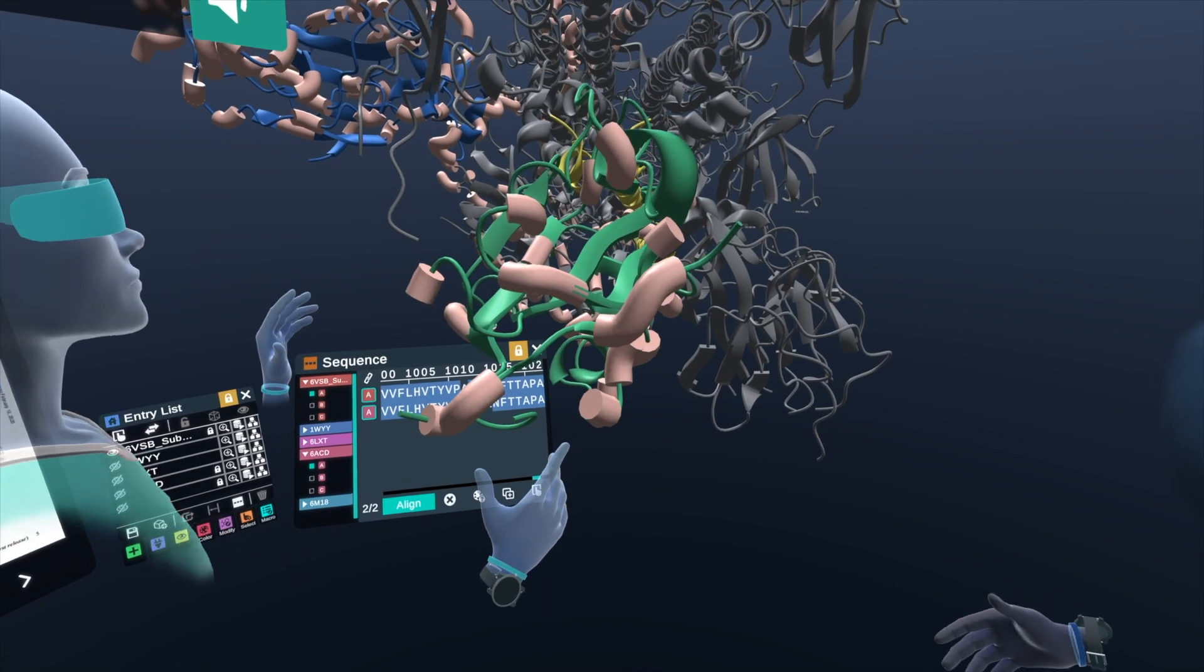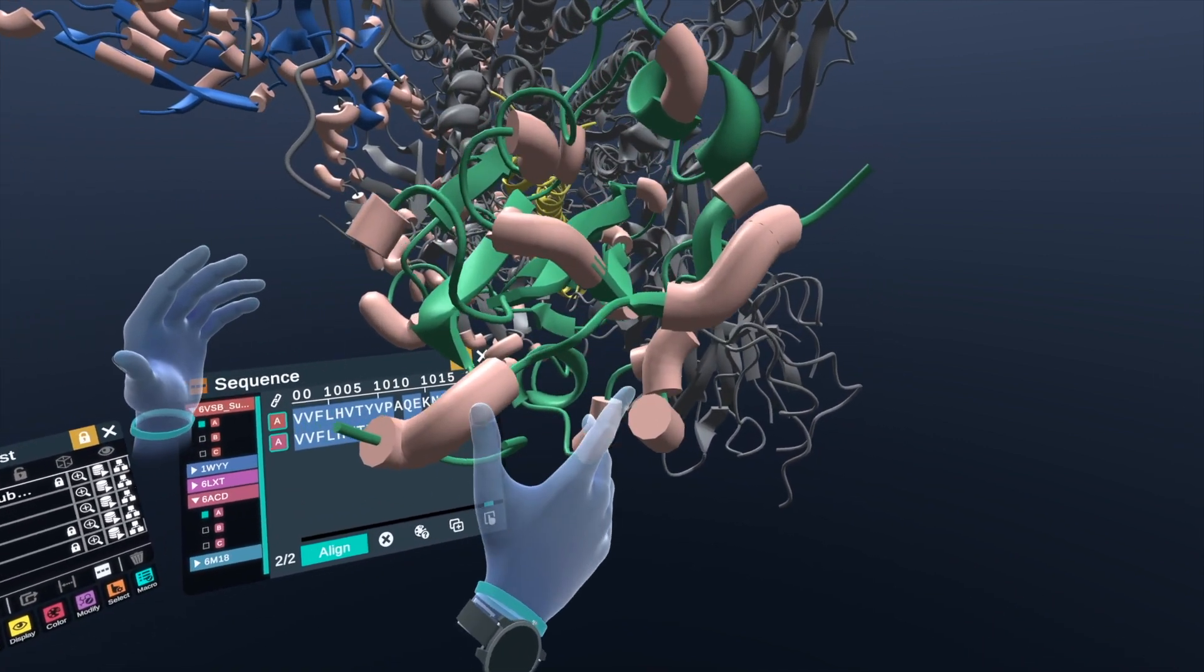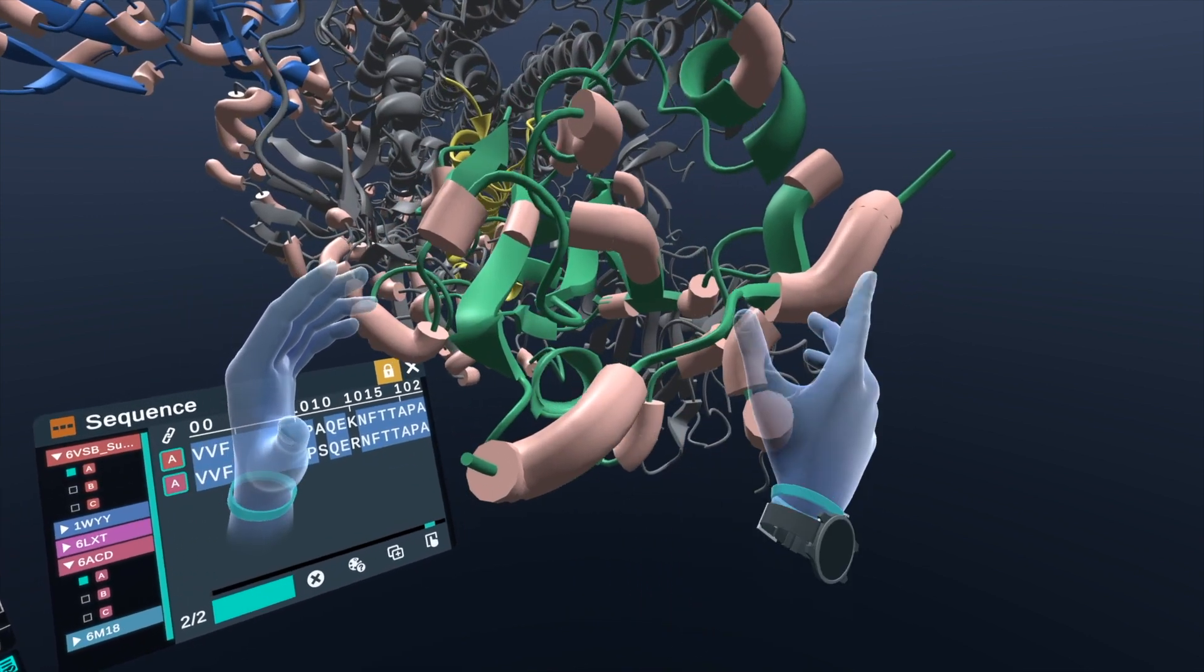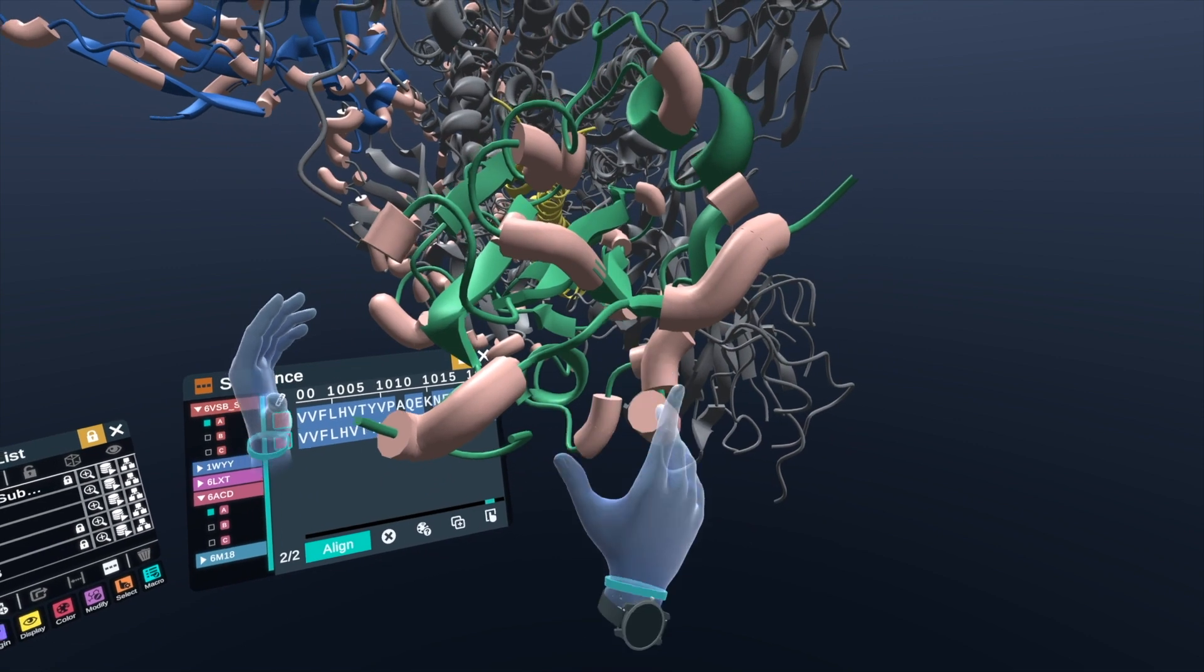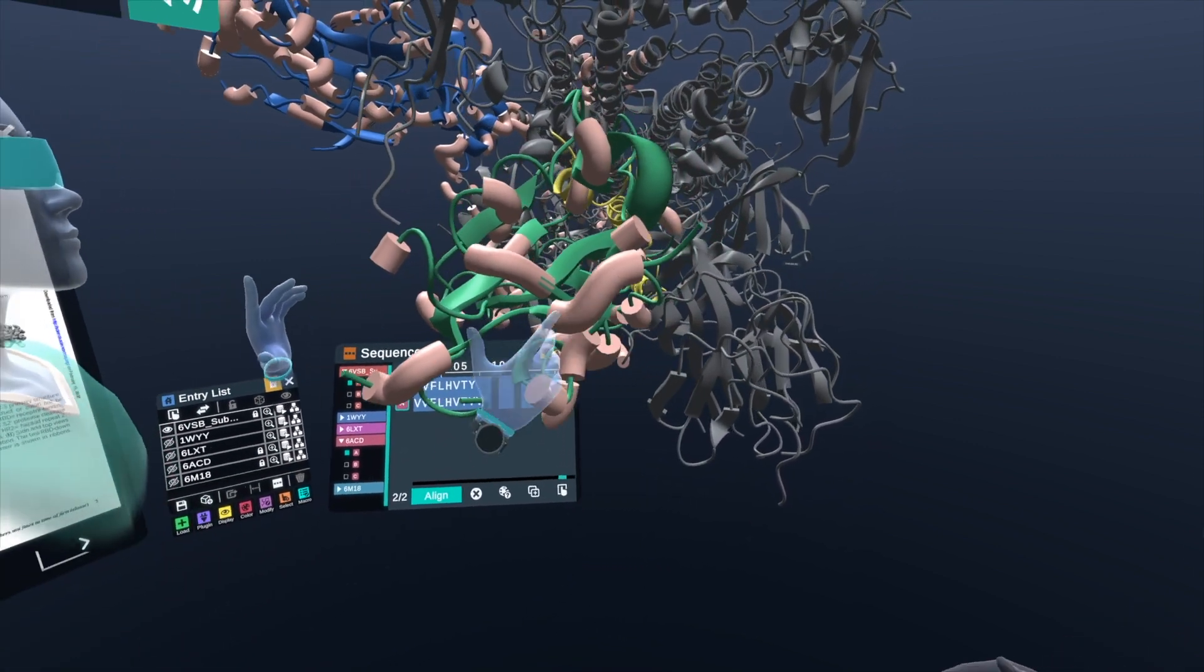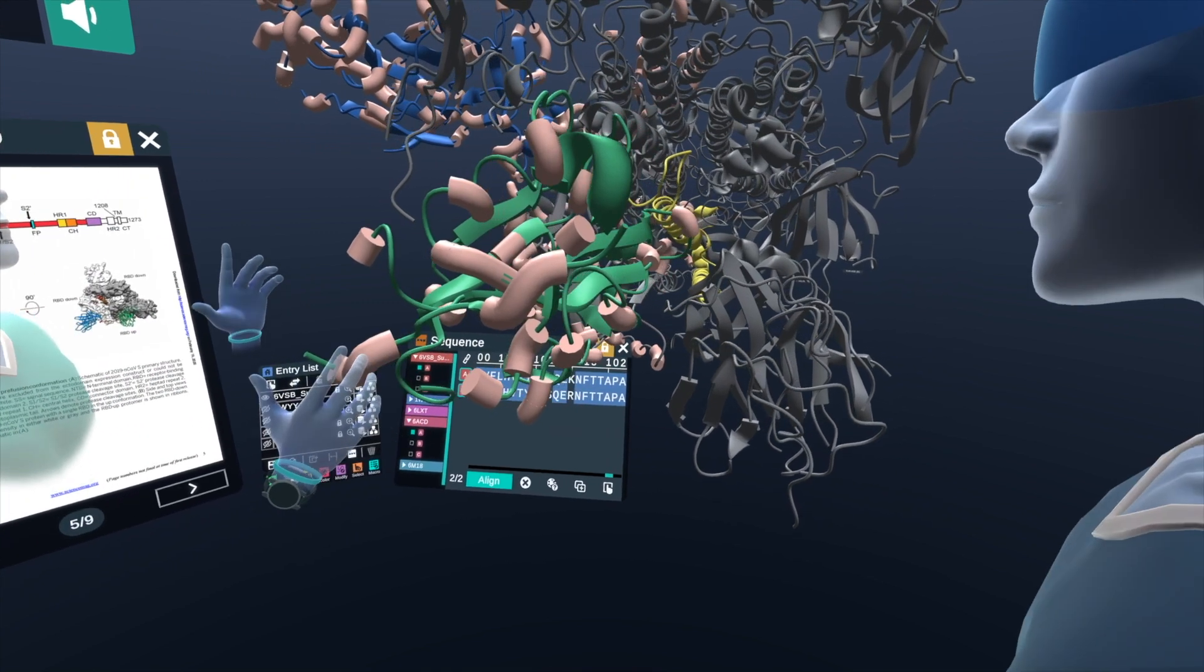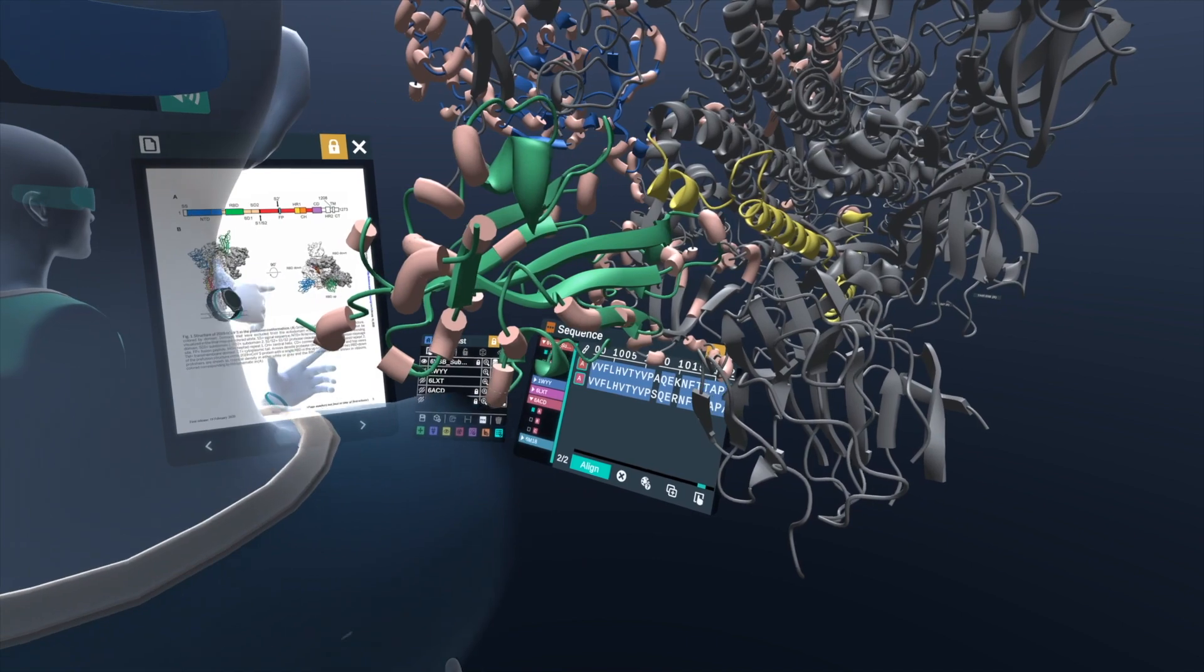This is known as the receptor binding domain, and so this is where it binds to the human ACE2 receptor, which is found on human cells. And what we've highlighted in the pink here are all the areas where there are differences in mutations, amino acid mutations, between the original SARS coronavirus and the new SARS-CoV-2.